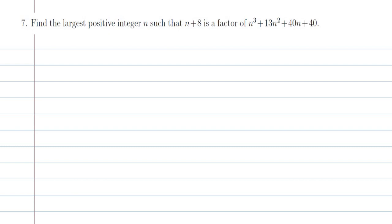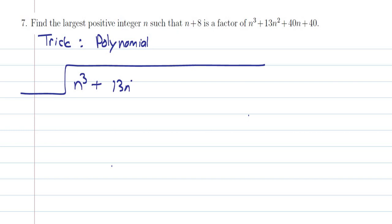The trick here is polynomial division — just like normal division. So n cubed plus 13n squared plus 40n plus 40 goes here, and we divide it by n plus 8. We take the leading term n and ask: n times what gives me n cubed? No surprise — it's n squared.